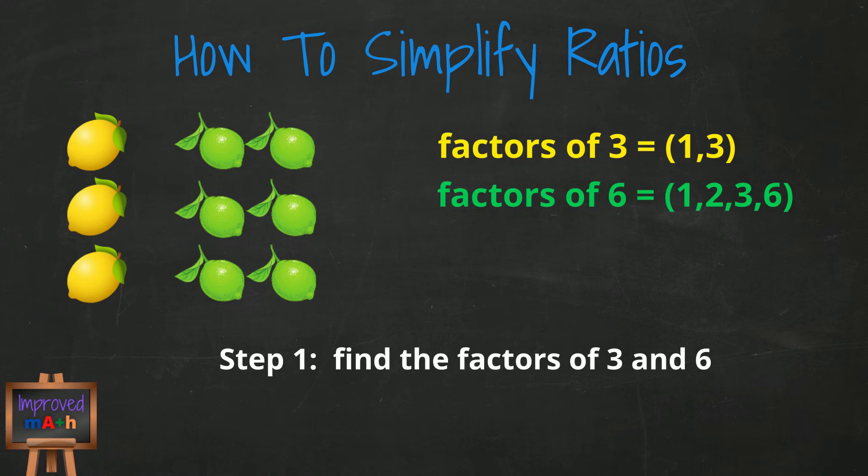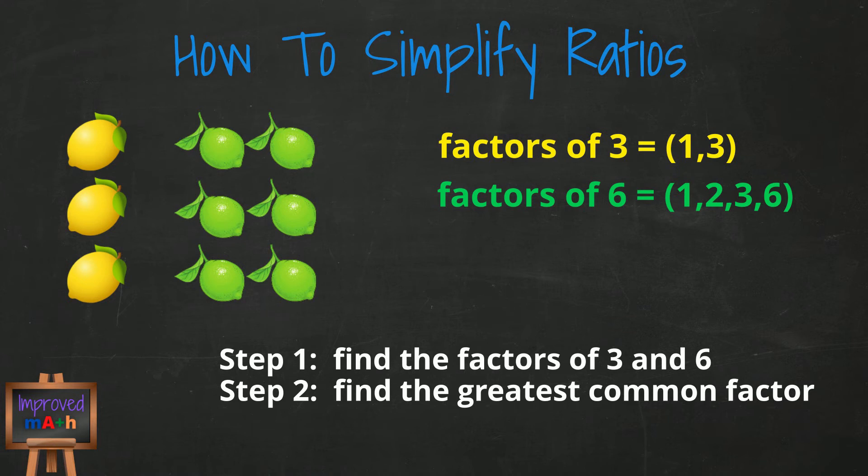Step 2: Find the greatest common factor. This is sometimes also called the greatest common divisor. Whatever you want to call it, we're looking for the largest factor that is present in both of our numbers in the ratio, 3 and 6.